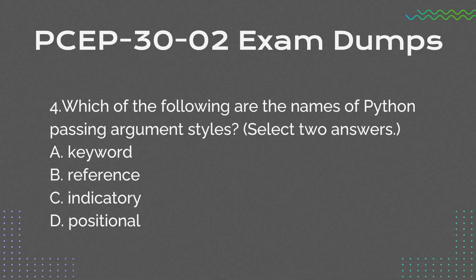Question 4: Which of the following are the names of Python passing argument styles? Select two answers. a. Keyword. b. Reference. c. Indicatory. d. Positional.